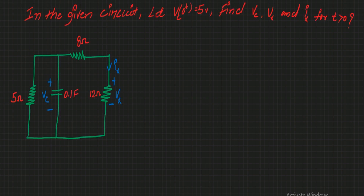In the given circuit, let Vc(0+) be equal to 5 volts. Find Vc, Vx, and Ix for T greater than 0. Initially there is a charge across the capacitor of 5 volts. The circuit has 3 resistors of 5 ohms, 8 ohms, and 12 ohms, and one capacitor of 0.1 farad.